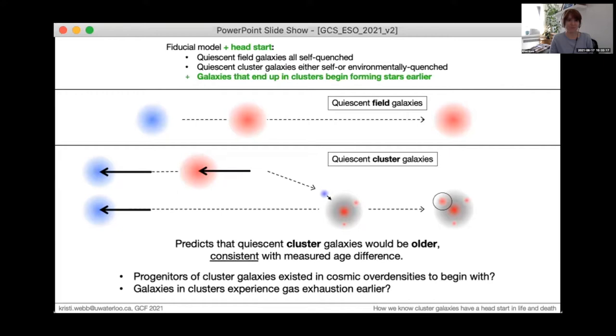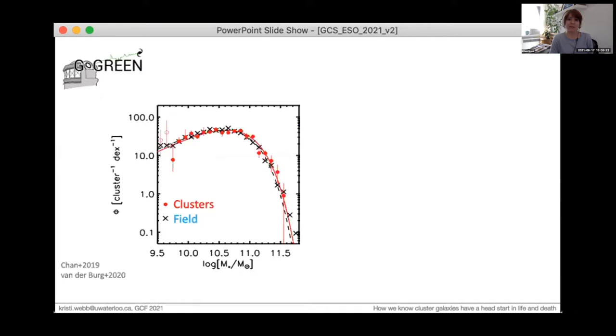In the last few minutes, I want to include the complementary information from the stellar mass functions measured for GoGreen by Remco Vandenberg, which further support this head start scenario. While in the local universe, the relative numbers of quenched galaxies in clusters is higher at lower stellar masses compared to field populations, at redshifts of 1 to 1.5, we find to high precision the stellar mass functions of quenched galaxies is identical between cluster and field.